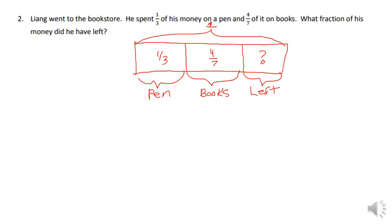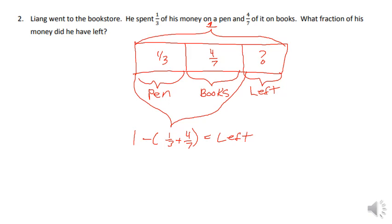We can subtract the sum of the two — one third plus four sevenths — and subtract that from one to find how much was left. Or we could take one whole, subtract one third, then subtract four sevenths. Two different ways: add the two parts and subtract from the whole, or do one minus one third minus four sevenths. I'll show you both.